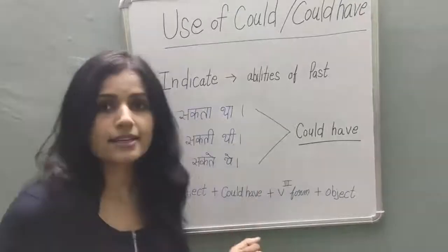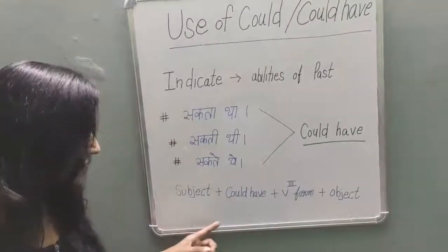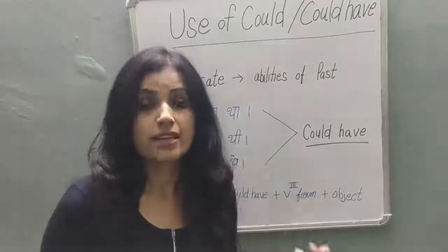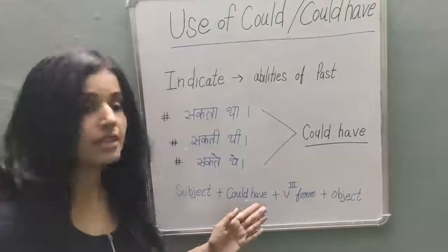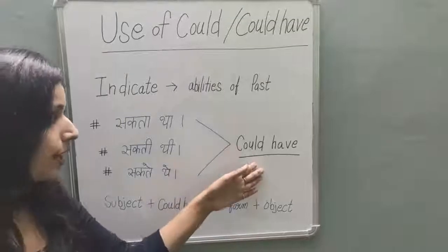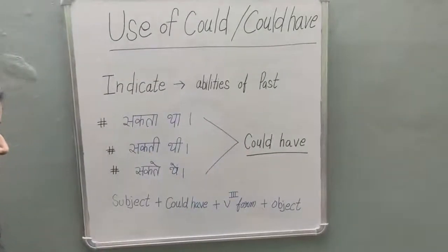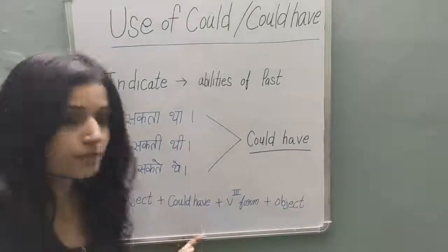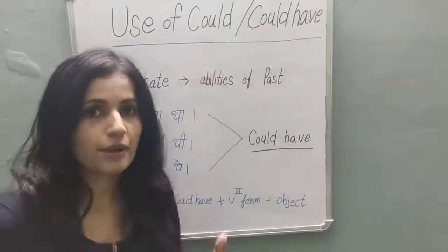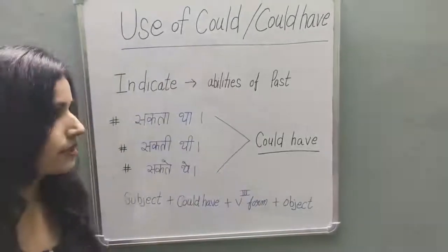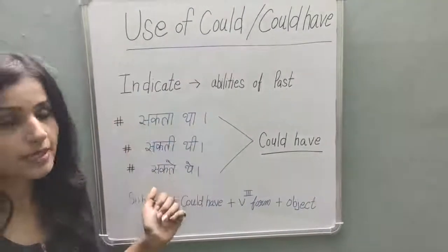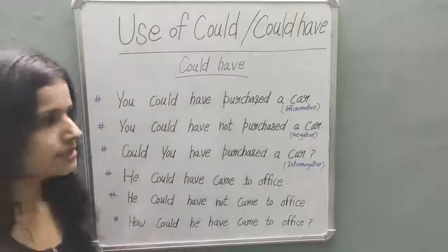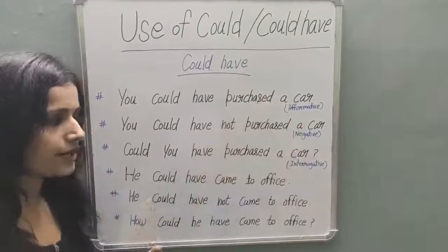When you create a sentence with 'could have', the structure is: Subject + could have + verb 3rd form + object. When we use 'could have', we always use the verb's 3rd form. Since it was possible in the past, you use the 3rd form. There are three forms: affirmative, negative, and interrogative.